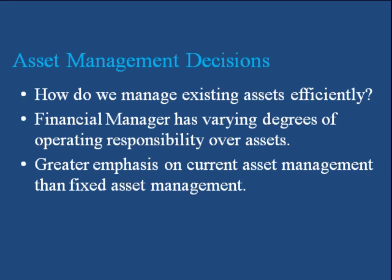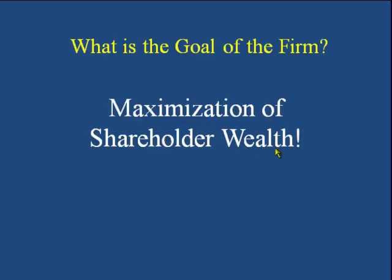These three decisions are taken by the finance manager with some overall goal in mind. That overall goal is maximization of shareholders' wealth. Shareholders' wealth maximization means maximization of share price, because share price is the barometer to evaluate the performance of the business. There are shortcomings of alternative objectives which is why shareholders' wealth maximization should be the ultimate goal.